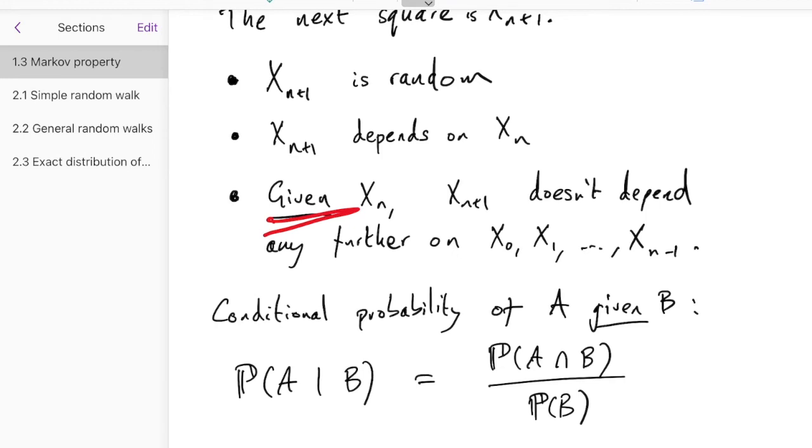But actually, we don't really use that formula in this course very much. We normally reason directly about the conditional probability of A, given B.